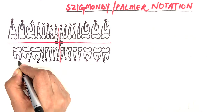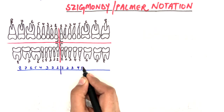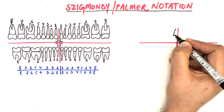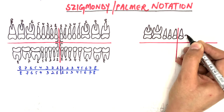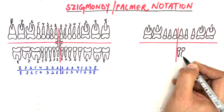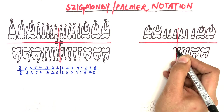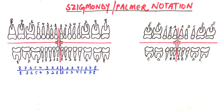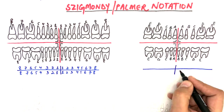The entire permanent dentition in the Palmer system is represented as follows. For primary dentition, Palmer notation uses alphabetical form with capital letters. The alphabet A represents the first tooth in each quadrant, which is the central incisor, and the last letter represents the second molar. The entire primary dentition in the Palmer system is represented as follows.